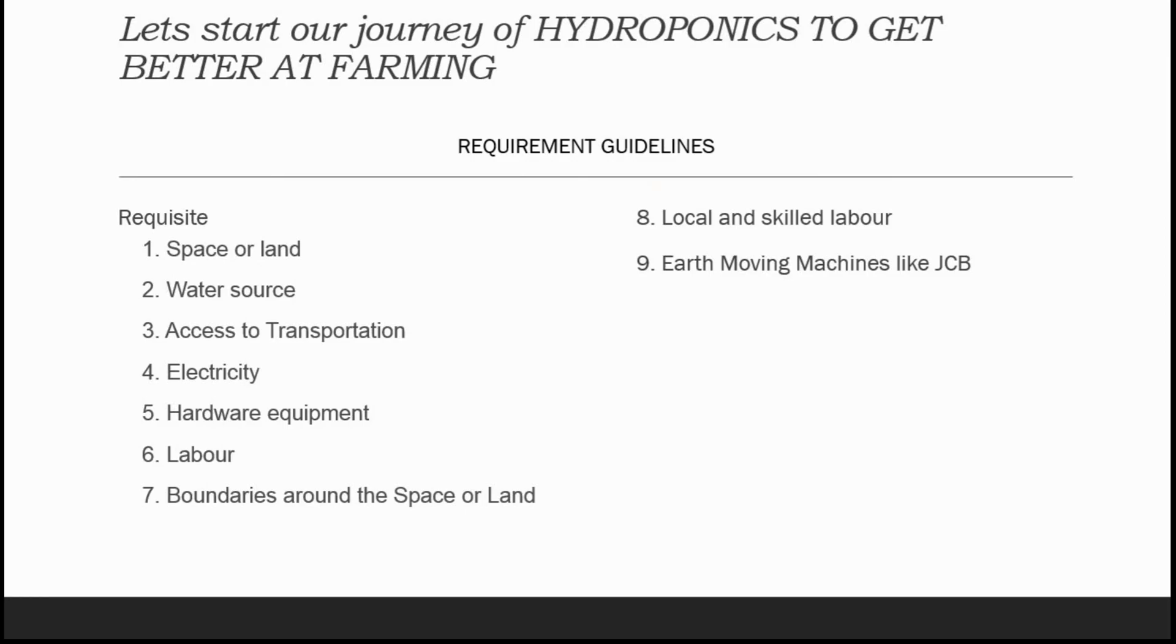So these are the nine must-have requisites. The first one is space or land. So you will need land and that can be your own or can be on long-term lease. You can also go for the terrace of the building of your home. Next comes the water source. You will need a water source available to you. You will need liters of water. If you have your own tube well or bore well, it's an additional advantage as it can be kept as a backup for the secondary source of water.